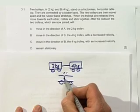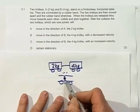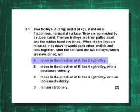When they get here to that event, the point of collision, there they are together with a piece of prestik or something and they stick together. After the collision, the two trolleys which are now joined, what will they do?